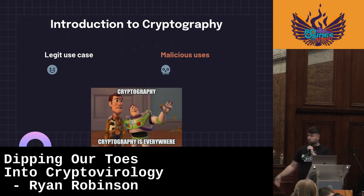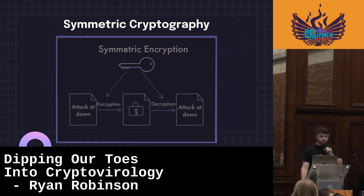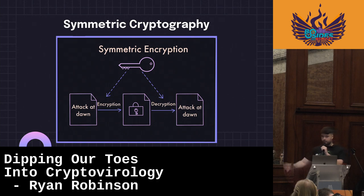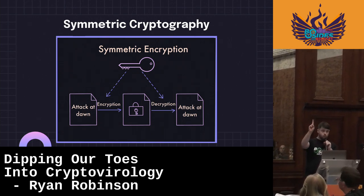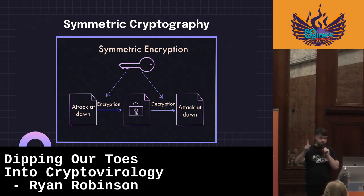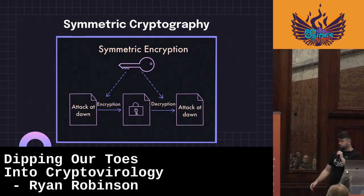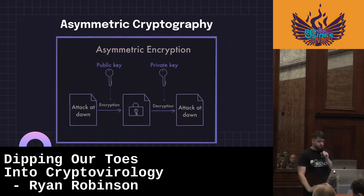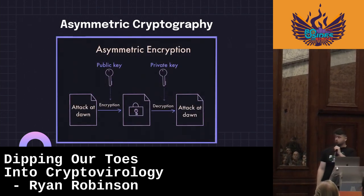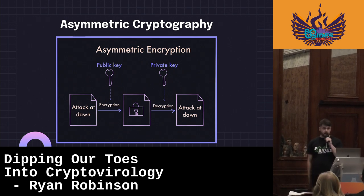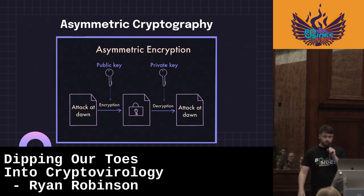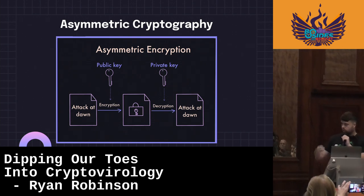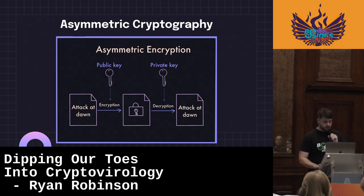Cryptography is everywhere. Symmetric encryption is where you use one key to encrypt data and the same key to decrypt — one key. Asymmetric encryption is where you generate a key pair, two keys, kind of like a yin and a yang. One key will encrypt and the other will decrypt. You share one with the world and you keep one to yourself.